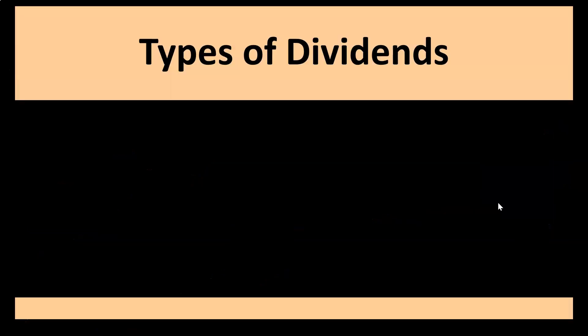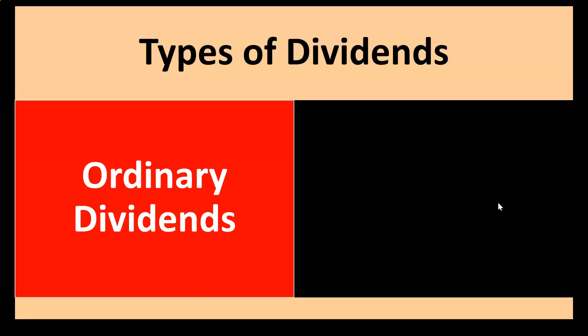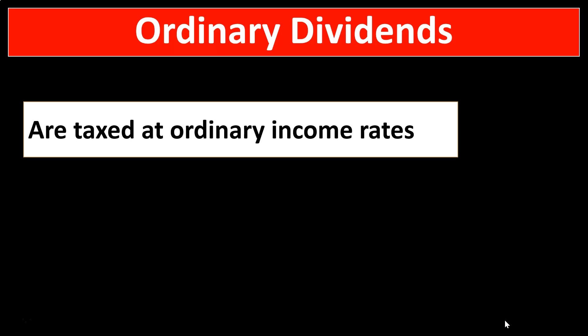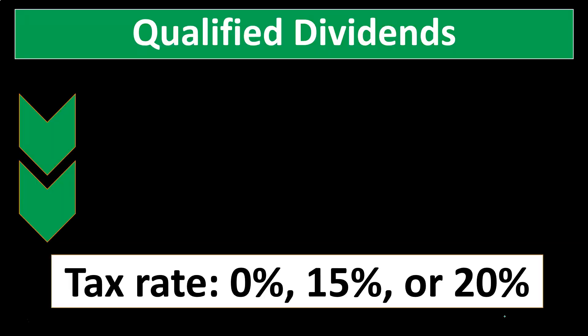Now we're talking about dividends — the distribution of earnings from the company to the owner, either ordinary or qualified. The qualified dividends is an attempt to give a tax incentive typically for US companies, so you'll have a different rate related to it generally. Ordinary dividends are taxed at ordinary income rates. If it's just an ordinary dividend and not a qualified dividend, it'll be included in the income line item straightforwardly and taxed at normal ordinary income rates.